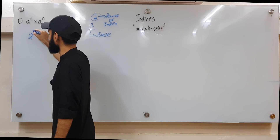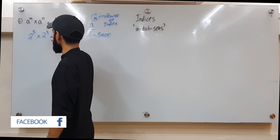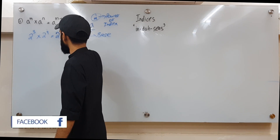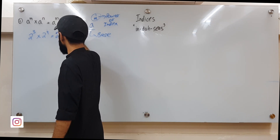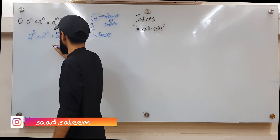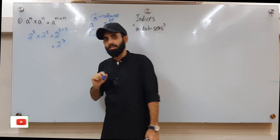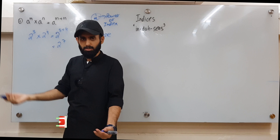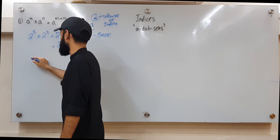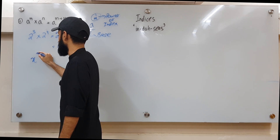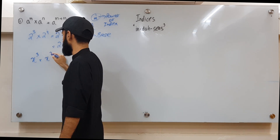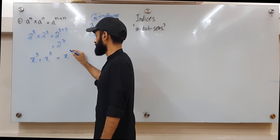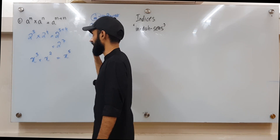When same bases are multiplied, the powers — or indices — are added together. For example, if you have 2 to the power 3 times 2 to the power 4, and you want to write it as a single base with one power, you add the powers: 3 plus 4 equals 7, giving 2 to the power 7. You can do the same with unknowns: x cubed times x squared equals x to the power 5.